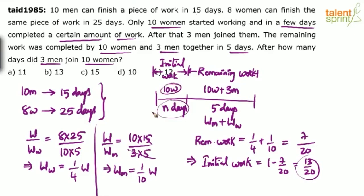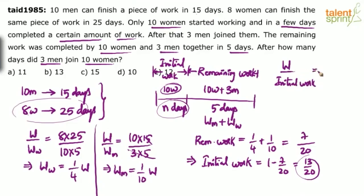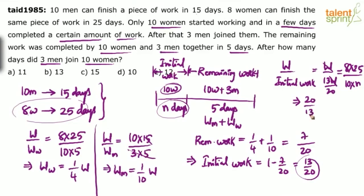This 13/20 of the total work was done by 10 women in n days. Using the given data: 8 women can do the total work in 25 days, so (13W/20) equals work done by 10 women in n days. W cancels, giving 20/13 equals 8 × 25 divided by 10n, which is 200/10n. Solving, n equals 13. Option B.